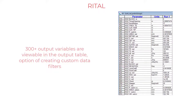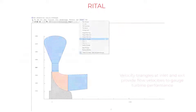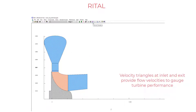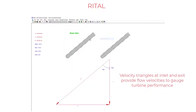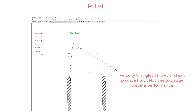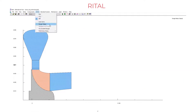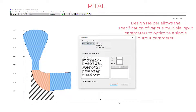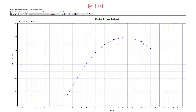A table can be used to look at any number of output parameters. In the UI, you can look at your parameter results, such as velocity triangles. A design helper can be utilized to look at one specific design parameter as it pertains to a desired output parameter.